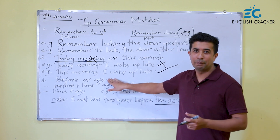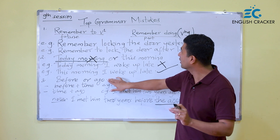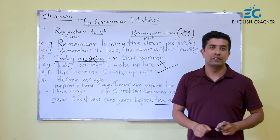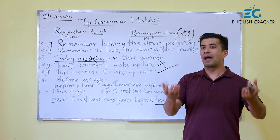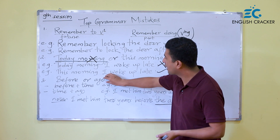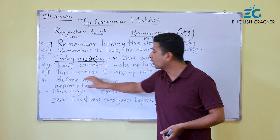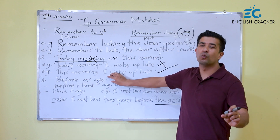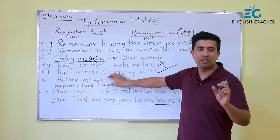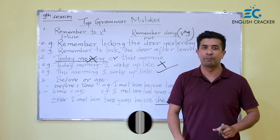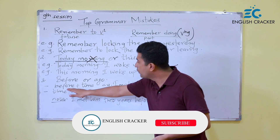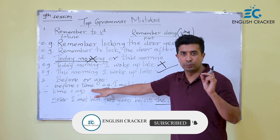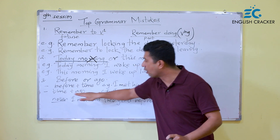Now, the very last grammar mistake: 'before' or 'ago'. There is often a debate. Some usages of 'before' are correct, but it should be used wisely. There are certain rules. After 'before', there should be a reference to time or an event — not a standalone time expression. The standalone time expression uses 'ago'.